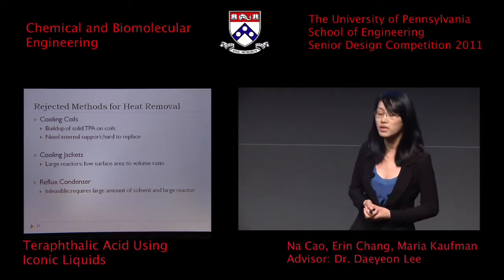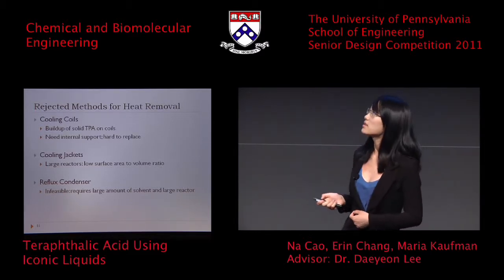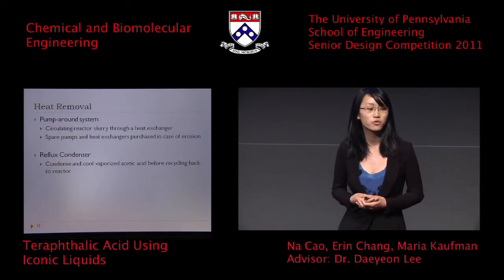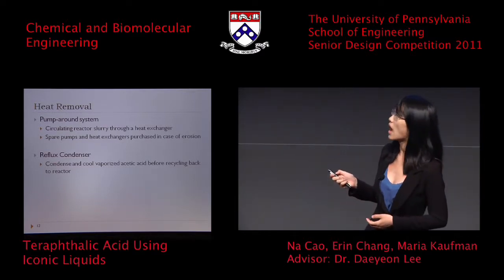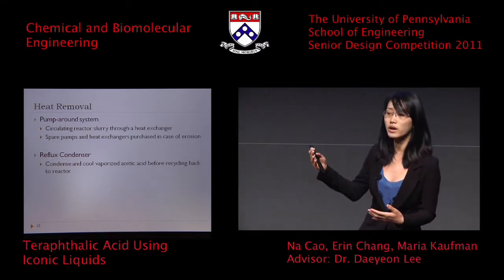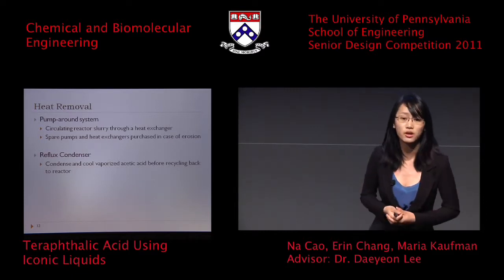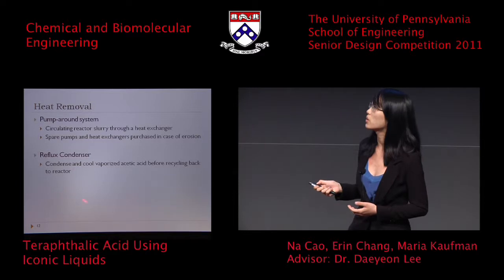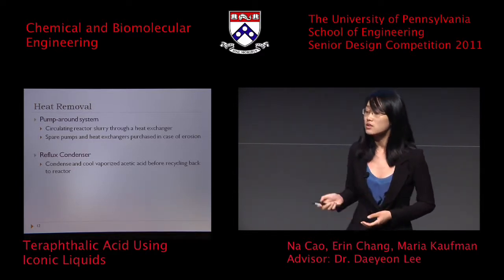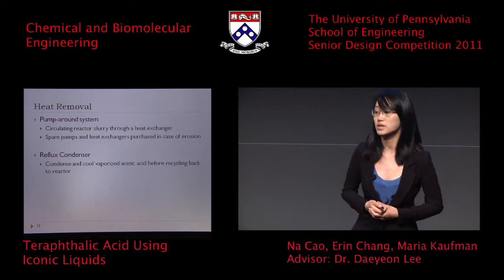Traditional heat removal methods such as cooling coils, cooling jackets, and reflux condensers don't really apply to our situation, because we're dealing with a lot of solids in our reactor that can erode equipment, and the amount of heat to remove is too large for traditional methods alone. So we came up with a unique idea of running two heat removal methods concurrently: a pump-around system where we pump the entire reactor slurry into a heat exchanger to cool it with cooling water, and we also cool and condense all vaporized acetic acid before recycling it back. Using these two methods together, we're able to maintain our reactor at an isothermal temperature.